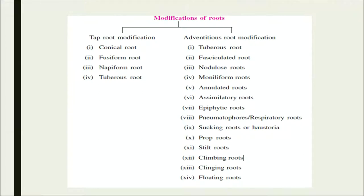The second category in the table is adventitious root modifications: tuberous root, fasciculated root, nodulose root, moniliform root, annulated roots, assimilatory roots, epiphytic roots, pneumatophores or respiratory roots, sucking roots, prop roots, stilt roots, climbing roots, clinging roots, and floating roots.